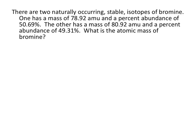Let's look at an example of how we would calculate an average atomic mass. There are two naturally occurring stable isotopes of bromine. One has a mass of 78.92 AMU and a percent abundance of 50.69%. The other has a mass of 80.92 AMU and a percent abundance of 49.31%. What is the average atomic mass of bromine? To find the average atomic mass of bromine, we take the weight of bromine in AMU times the percent abundance of that isotope.